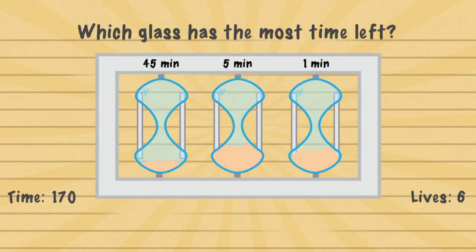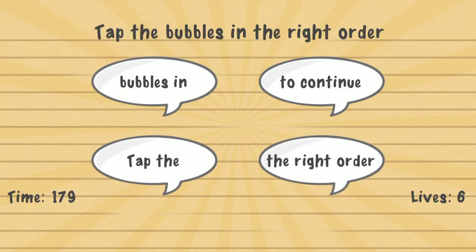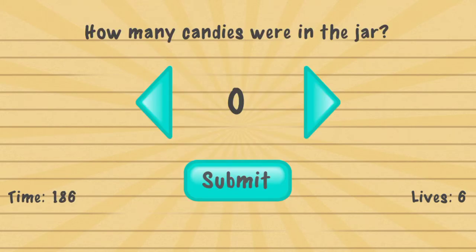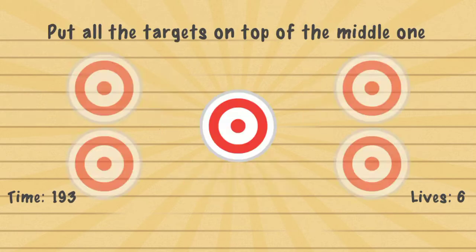Which glass has the most time left? You tap the one with forty-five minutes. That was pretty simple. Tap the bubbles in the right order to continue — you tap them in that order. Take a candy — you take the word 'candy', drag it in the jar, and you tap the jar. How many candies were in the jar? It's always twenty-six.